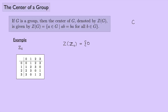What about 1? Well, 1 and 2 give 3, and 2 and 1 give 3. And 1 and 3 give 0, and 3 and 1 give 0. So it looks like 1 would be in there. How about 2? Well, 2 and 1 give 3, and 1 and 2 give 3. And 2 and 3 give 1, and 3 and 2 give 1. That looks like it commutes with everything. And you can check for yourself that 3 is also in there. So in this particular case, we ended up getting the entire group.